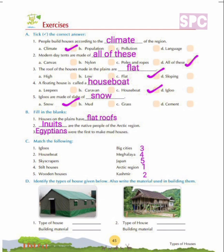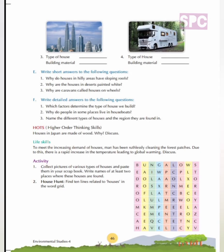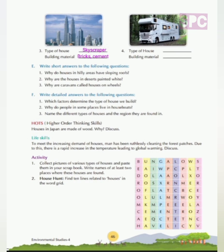Question D: Identify the types of house given below and write the materials used in building them. Below are images of different types of houses. First is a tent — materials required are waterproof canvas, nylon, and poles for structure. Second is a stilt house — materials required are wood and stilts. Third is a skyscraper — materials required are bricks, cement and iron. Fourth is a caravan — it requires a truck or car.